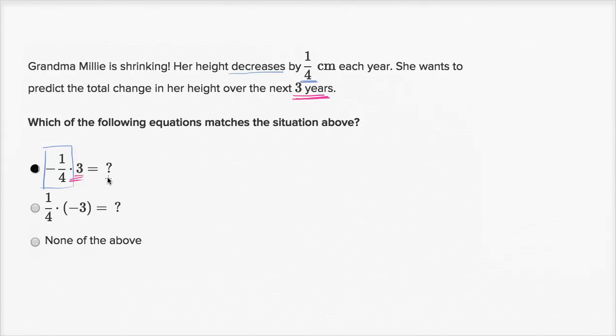So after three years, her change in height would be negative three-fourths of a centimeter. You just multiply this out, which means that she lost three-fourths of a centimeter.